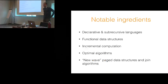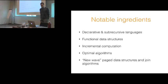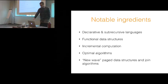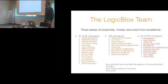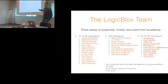Some of our key ingredients for achieving this are declarative and subrecursive languages, functional data structures, incremental computation — in some sense 90% of what we do is incremental computation — optimal algorithms, and using new modern algorithms and page data structures. We have a team with three areas of expertise: PL and software engineering, databases, and machine learning and operations research. Most of these people have been recruited from academia. We have 31 PhDs, eight full-time former professors, and five part-time professors with the company.